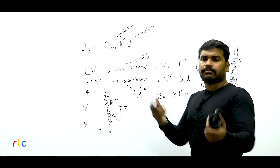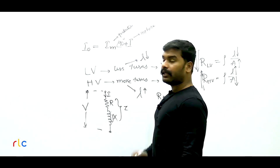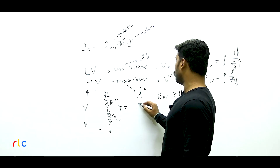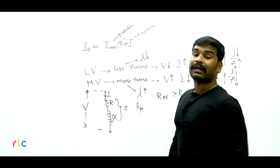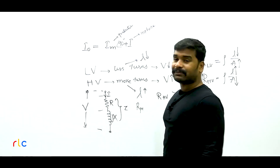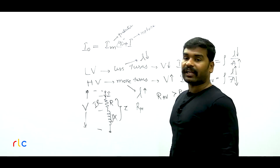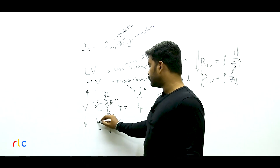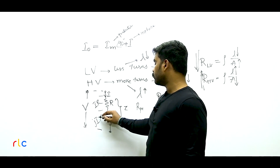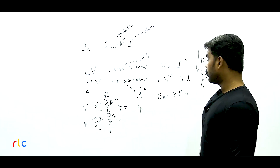Next question: Two transformers X and Y have identical ratings, same dimensions, but different lamination thicknesses — X has 0.8 mm thick laminations and Y has 1.2 mm thick. Comparing their magnetizing branch parameters RC and XM: the question asks which option correctly describes their likely relationship. Laminations correspond to the core of the transformer, which in the equivalent circuit is represented by the shunt/magnetizing branch containing RC and XM.